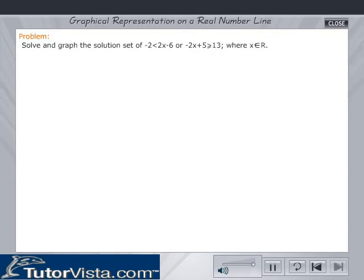Problem: Solve and graph the solution set of -2 < 2x - 6 or -2x + 5 ≥ 13 on a real number line where x belongs to R.